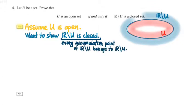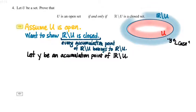So how do we do that? Well, we need to start by picking an accumulation point of R minus U. Let's call that accumulation point Y. Well, the issue here is that there are two different cases. On the one hand, Y might be an element of the complement, R minus U, call that case one.